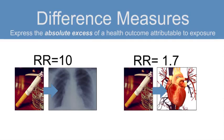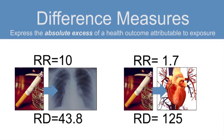Consider this example. The exposure of smoking has a risk ratio of about 10 for lung cancer mortality, but a risk ratio of only approximately 1.7 for coronary heart disease mortality. However, the risk difference for coronary heart disease is much higher — 125 — compared with the risk difference for lung cancer, 43.8.